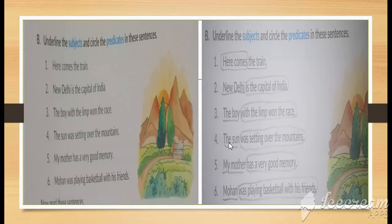For example, 'the sun was setting over the mountains.' Only 'the sun' is the subject, and 'was setting over the mountains' is the predicate because it is telling about the sun.